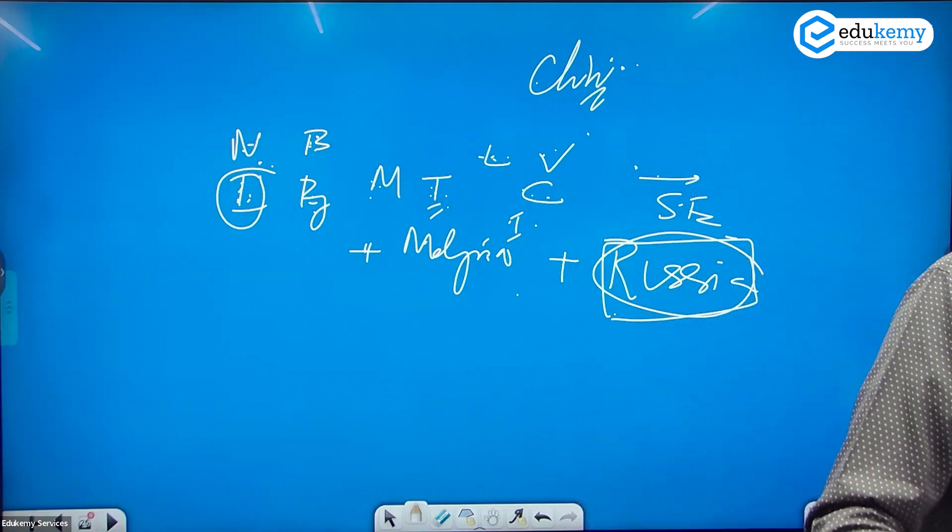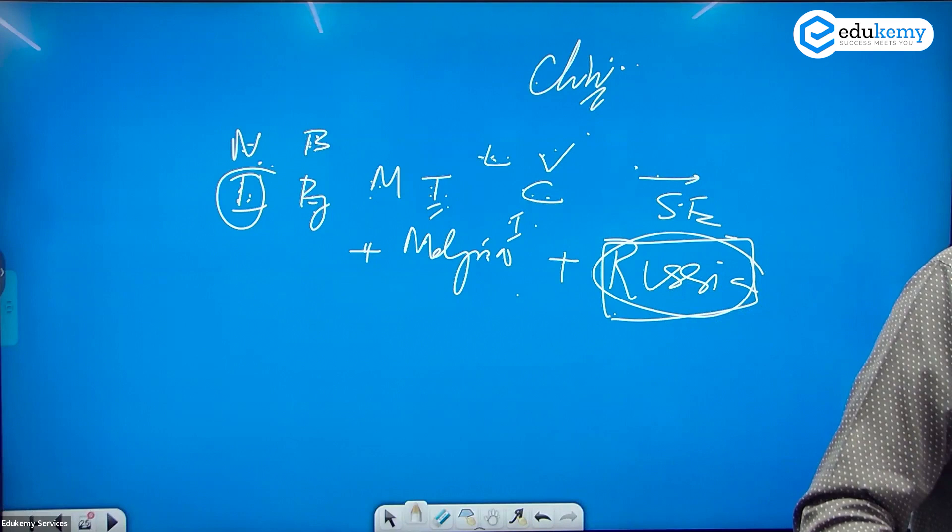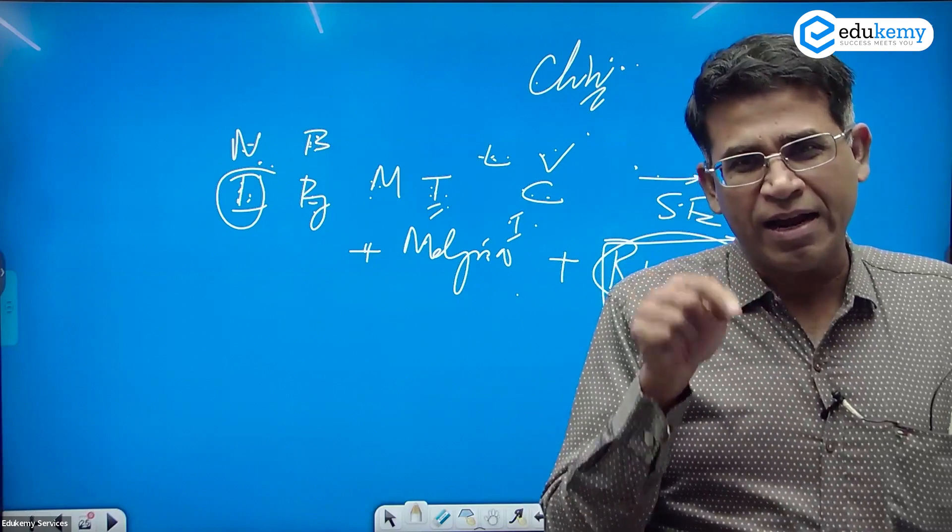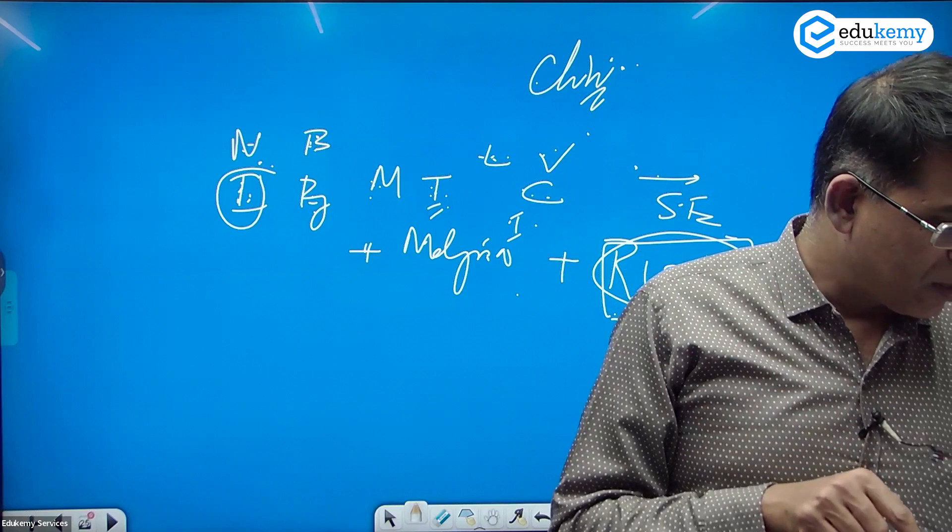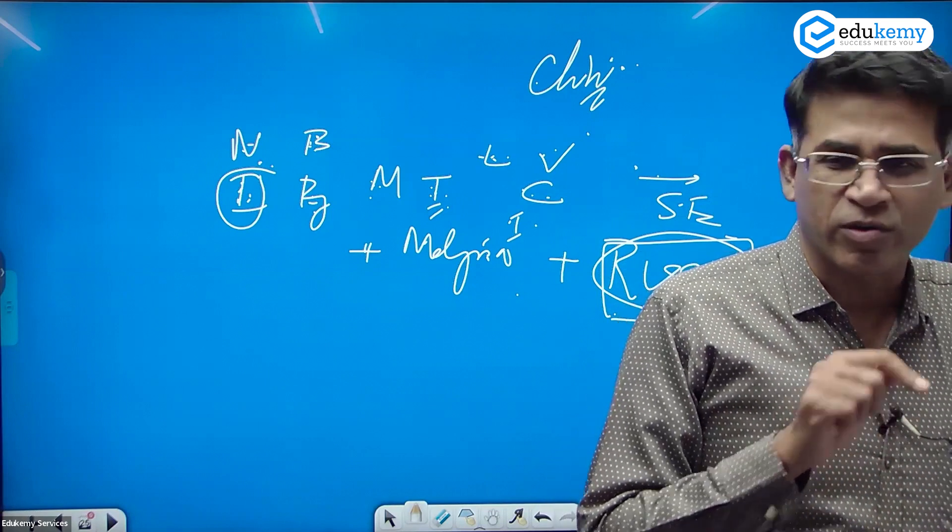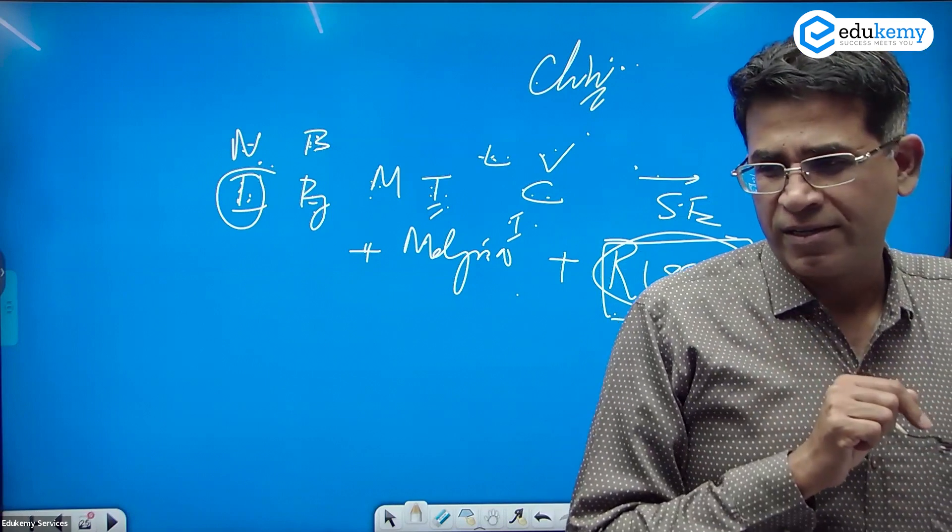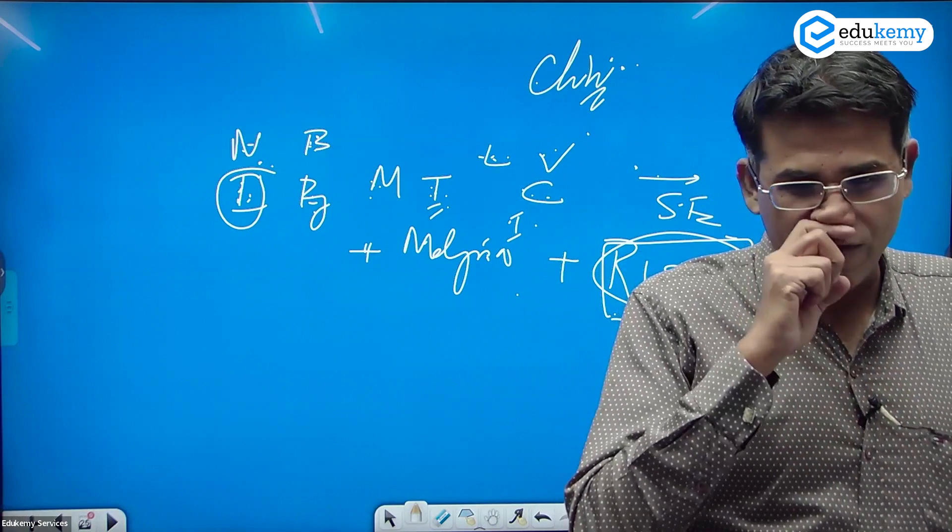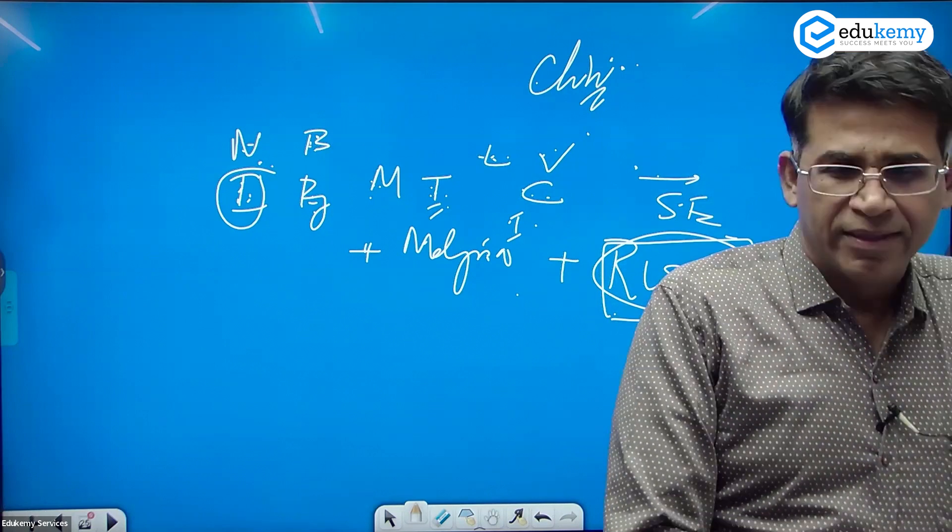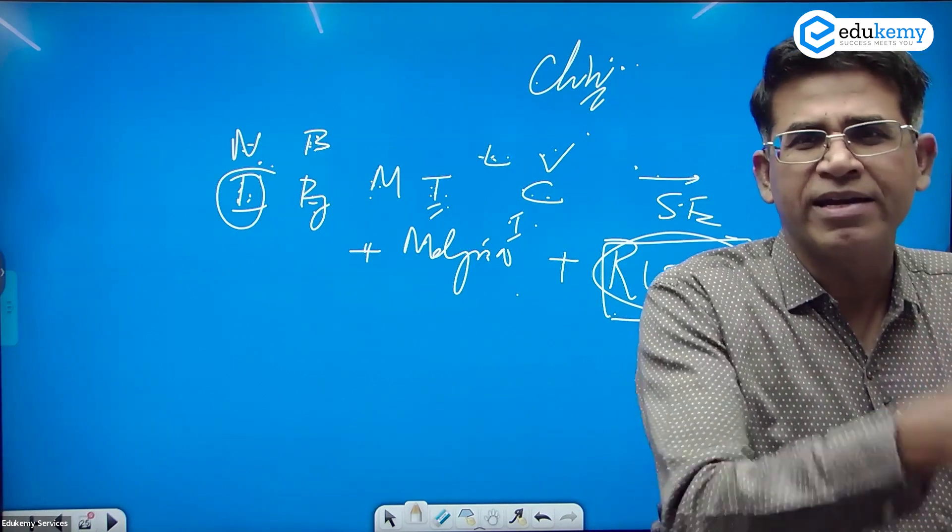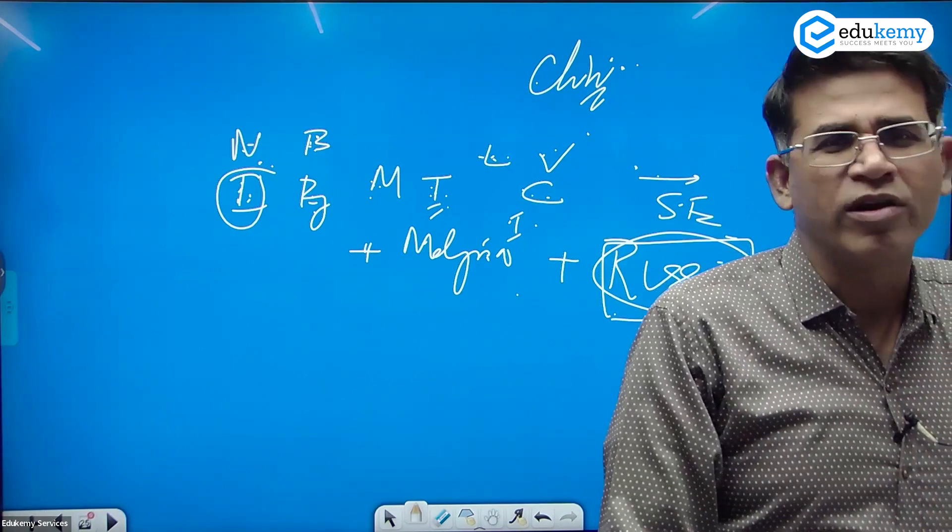So in Nilgiris, there is an area called Sigur Plateau. In Nilgiris Sigur Plateau of Nilgiri district, the state government had declared notification of elephant corridors which was challenged. How can they declare? Do they have the authority or not?